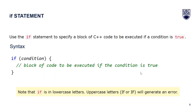Let's understand more these conditional statements, starting with the if statement. We use the if statement to specify a block of C++ code to be executed if a condition is true. The syntax is: write if, followed by your condition in parentheses, then open the bracket, write the block of code to execute if the condition is true, and close the bracket. Note that if is written in lowercase letters — using uppercase will generate an error.